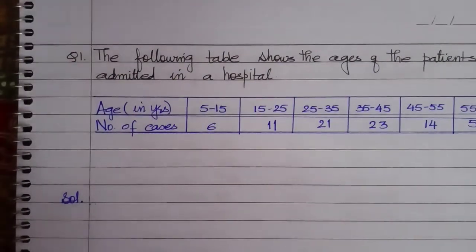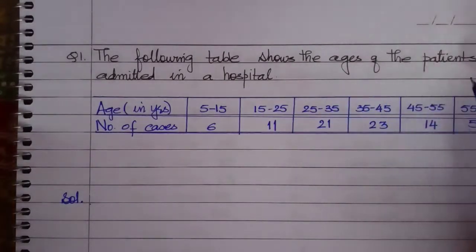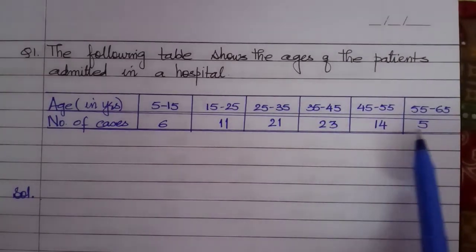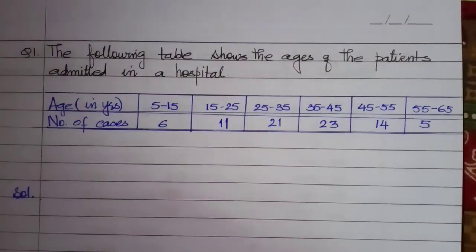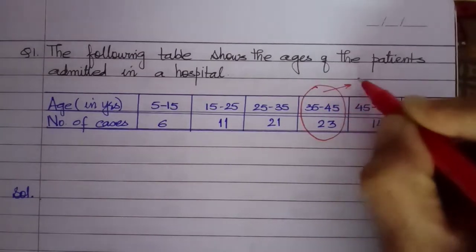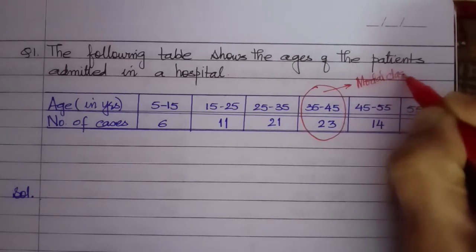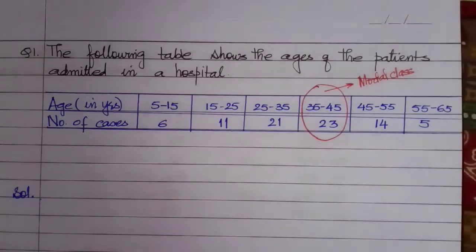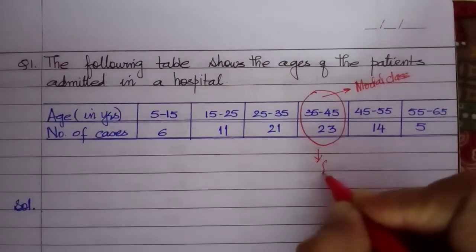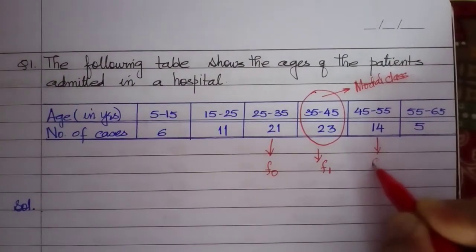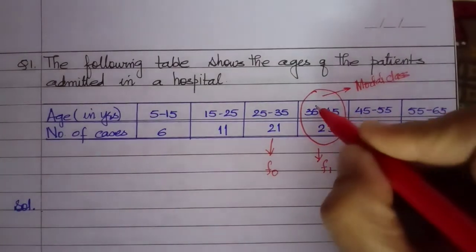Look here now. This is the question: The following table shows the ages of patients admitted in a hospital. Which has got the highest value? Where frequency is maximum, that particular class is called modal class. This is F1, the preceding frequency is F0, and the succeeding frequency is F2. This is L, the lower limit.